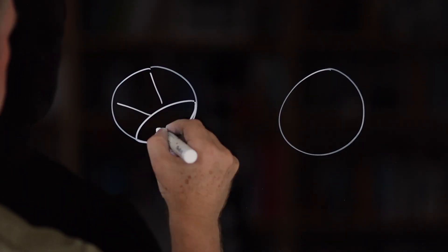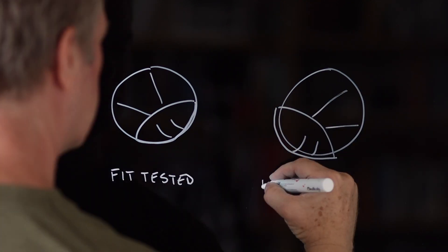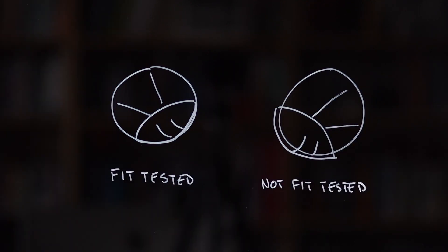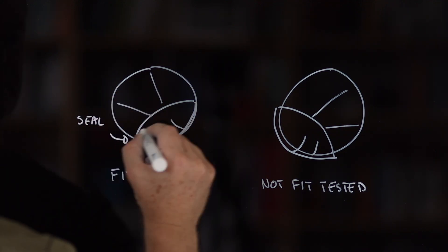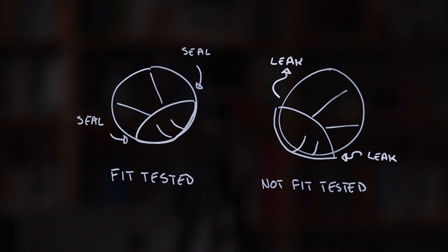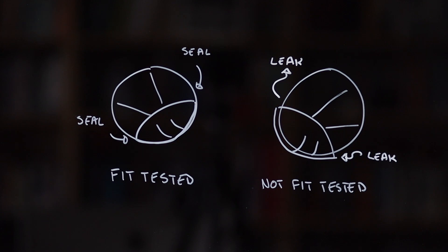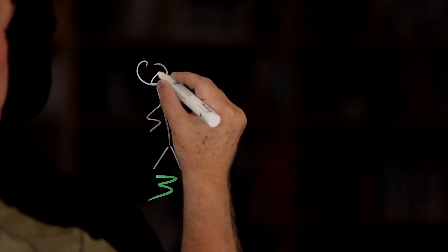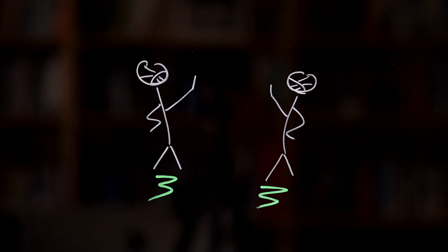But the gold standard here is a fully fit-tested N95 respirator. This is one where you've been trained to use it properly, and tests have shown that you can put it on without it leaking. If both of you are wearing fit-tested N95s, you get a whopping 24 hours and 45 minutes extra time over not wearing any face mask at all.